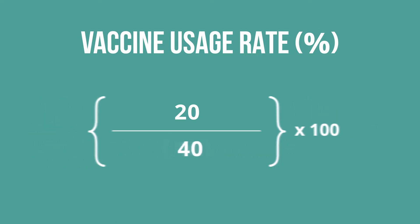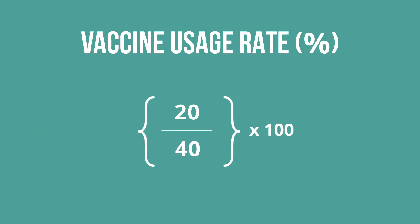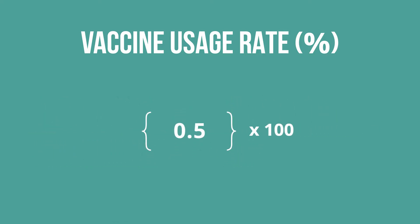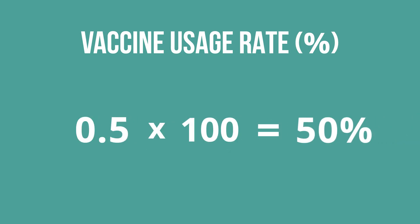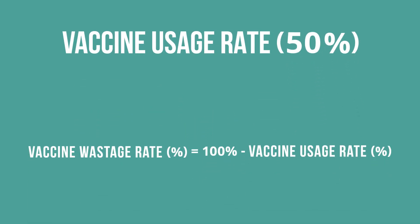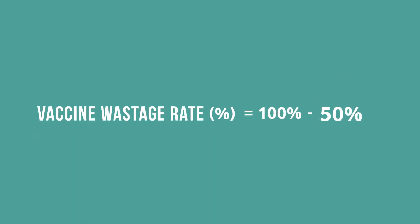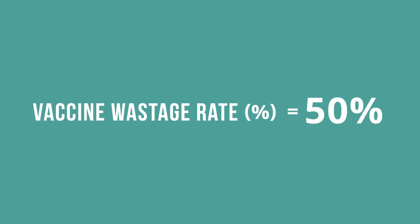Then, divide the number of doses used by the denominator: 20 divided by 40 is 0.5. To calculate your vaccine usage rate, convert this to a percentage by multiplying 0.5 by 100, or 50 percent. Now to find your vaccine wastage rate, subtract your vaccine usage rate from 100 percent: 100 percent minus 50 percent equals 50 percent.